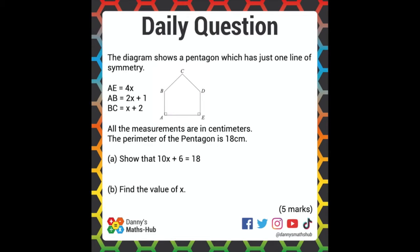Show that 10X plus 6 is equal to 18. Well, if we're told that it only has one line of symmetry, the only line of symmetry it could possibly have is down here. Which means length BC and CD have to be equal, and length AB has to be equal to length DE.